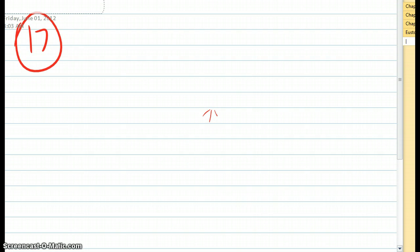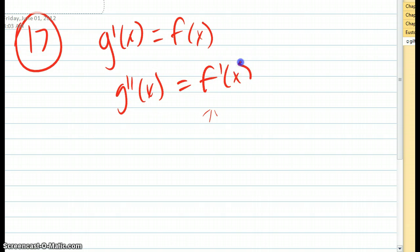Alright, so by the second fundamental theorem of calculus, g prime of x equals f of x. So that means that g double prime of x equals f prime of x. G has a point of inflection where g double prime equals f prime changes sign, and that happens when x equals 2 and x equals 5. So that means the answer is c.